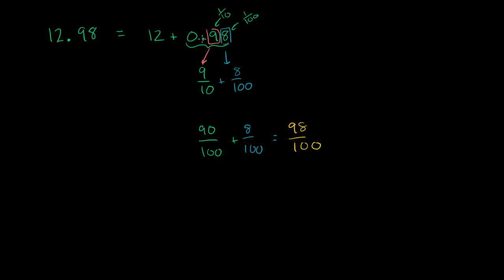And so 0.98 is 98 hundredths. And another way you could have said that is, look, this space right over here is in the hundredths place. And so this is 98 hundredths. So you could have skipped this right over here.